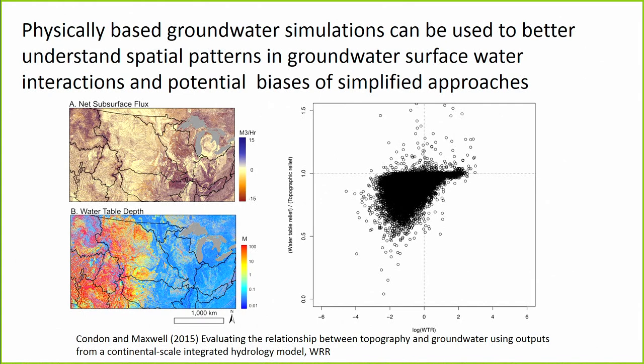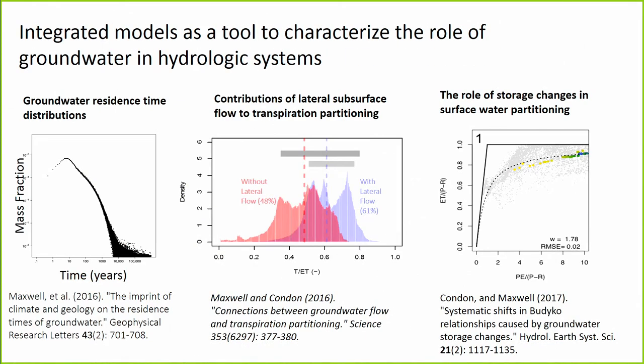With integrated models, if we simulate all of the groundwater, we can use it to interrogate more conceptual models that we use to understand water balances. This is a comparison I did with our continental simulations comparing to water table ratios — which are used a lot in large-scale modeling — showing that water table ratios really don't give you the answer; this is not a one-to-one scatter. We can also look at residence time distributions, which is really important for understanding flow paths and contributions to transpiration.